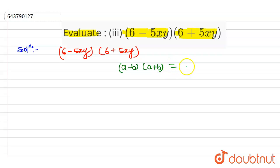So what is its value? a square minus b square. So according to this question, this 6 is a and 5xy is b. 6 is a and this 5xy is b. So it is in the form of a minus b into a plus b.